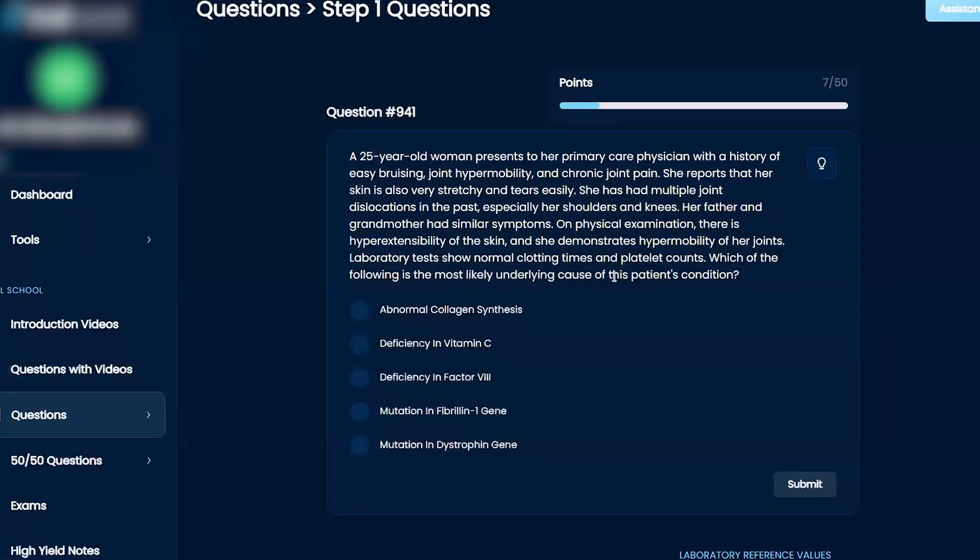Which of the following is the most likely underlying cause of the patient's condition? Abnormal collagen synthesis, deficiency in vitamin C, deficiency in factor VIII, mutation in fibrillin gene, fibrillin 1 gene, and mutation in the dystrophin gene.